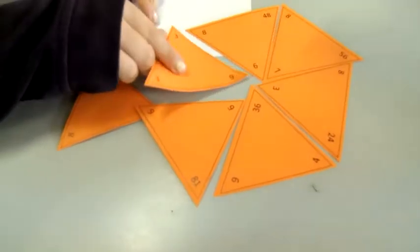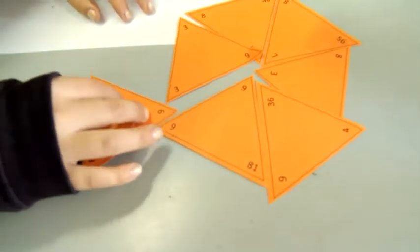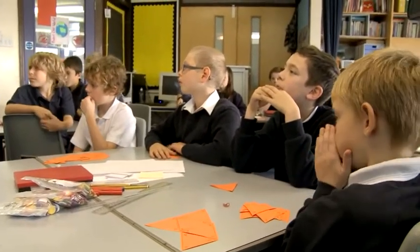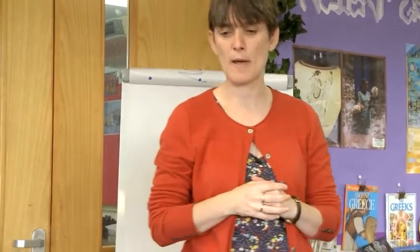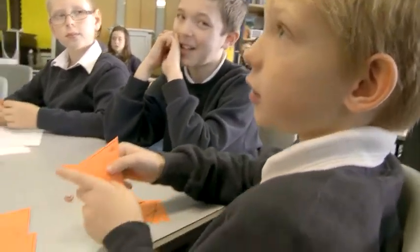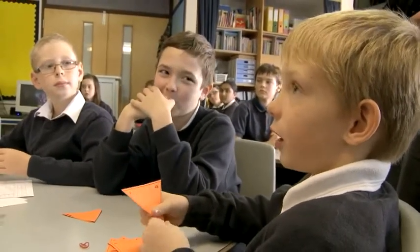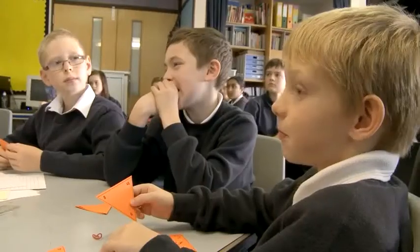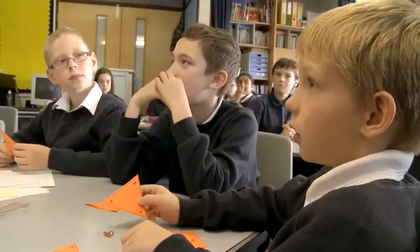They start to discover the patterns behind some of these multiplication facts. I saw a lot of children who are knowing more and more of those multiplication facts instantly. I just want to talk about one or two that maybe weren't instant. Hayden, do you want to tell me about a couple that you didn't know instantly but could work out pretty quickly? 8 6's — I did 8 5's and then added another 8. So 8 5's was 40, and then you added an 8, so 6 8's are 48.